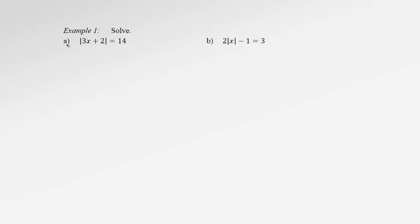Let's try some examples. The first one is absolute value of 3x plus 2 equals 14. To resolve the situation with absolute value, we drop absolute value, but the consequence is we need to rewrite the remaining equation in two cases. The expression under the absolute value, 3x plus 2, equals 14, or 3x plus 2 could be equal to negative 14. Notice that it's about the whole expression 3x plus 2 — it could be either 14 or negative 14.